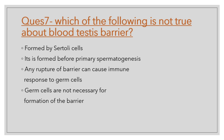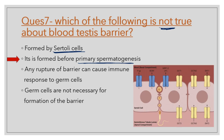Question number 7: Which of the following is NOT true about the blood-testes barrier? (A) It is formed by Sertoli cells. (B) It is formed before primary spermatogenesis. (C) Rupture of the barrier can cause immune response to germ cells. (D) Germ cells are not necessary for formation of the barrier. The correct option is B. The statement that it was formed before primary spermatogenesis is wrong. The blood-testes barrier is formed by Sertoli cells, and rupture can cause immune response to germ cells.